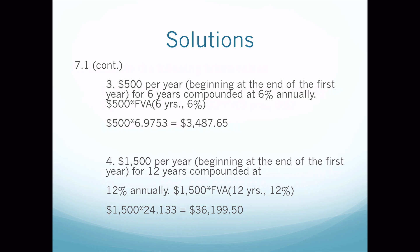We have $500 put in the bank at the end of the year for six years at 6%, which tells us we need to go to the future value annuity table. I wrote the formula as $500 times FVA(6 years, 6%). We go find six years — which are six periods — go down and find the multiplier 6.9753. We do our math: $500 times the multiplier, and we get $3,487.65.